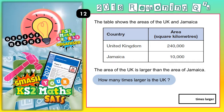Welcome Satsbusters to question 12, and this one is all about comparing the size in area of two countries in square kilometres. We are comparing the UK and Jamaica. The UK is 240,000 square kilometres, and Jamaica is 10,000 kilometres squared. We are being told that the area of the UK is larger than the area of Jamaica — that's pretty obvious because 240,000 is larger than 10,000.